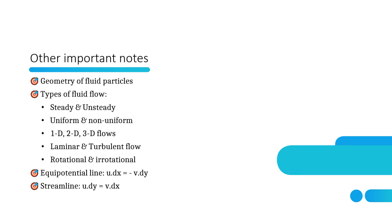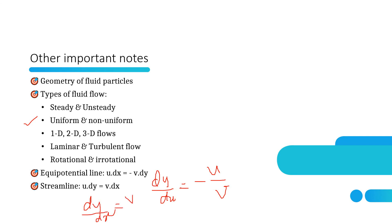Turbulent flow has zigzag motion and Reynolds number greater than 4000. The equipotential line satisfies u·dx = −v·dy, giving slope dy/dx = −u/v. For a streamline, dy/dx = v/u. Calling these slopes M1 and M2, M1·M2 = −1, meaning equipotential lines and streamlines are orthogonal to each other.